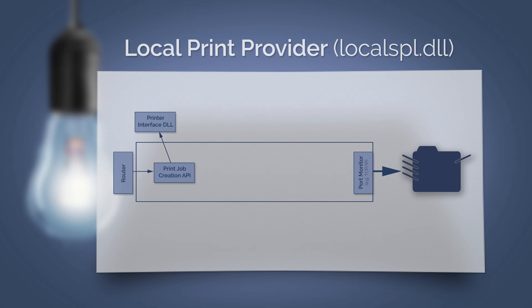The printer dialog consists of two parts. The first part is the user interface with the printer properties, displayed when you open the printer's properties in an application such as Word. The second part is the interface for the application without the user interface. The two parts are again handled by the API of the print job creation, and this generates the spool file. It is then created in the spool directory and saved.